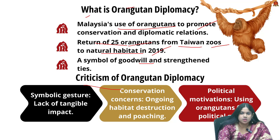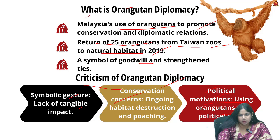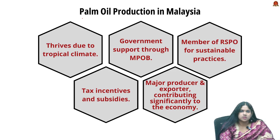Criticisms of orangutan diplomacy include: first, symbolic gesture — critics argue it is mere symbolism lacking tangible conservation impact; second, conservation concerns — habitat destruction and poaching of orangutans continue; and third, political motivations — concerns about using orangutans for political gains.